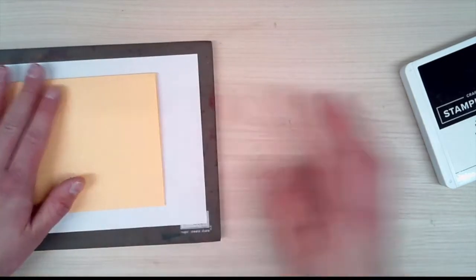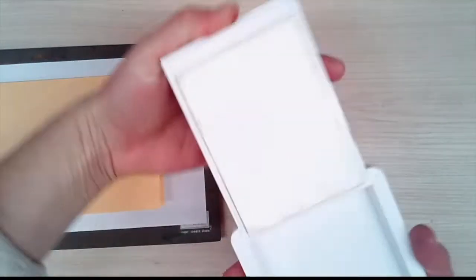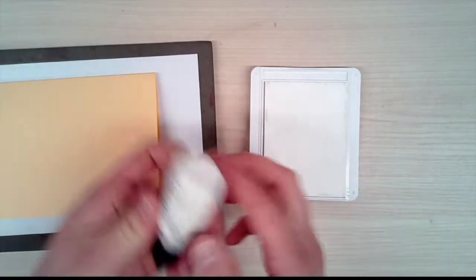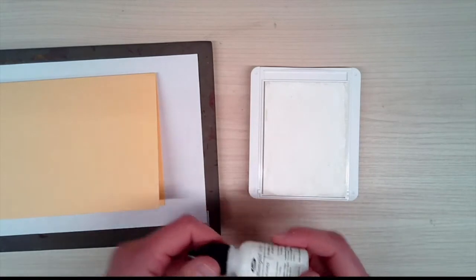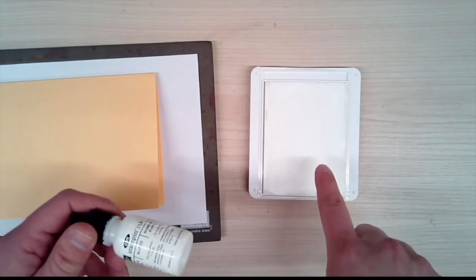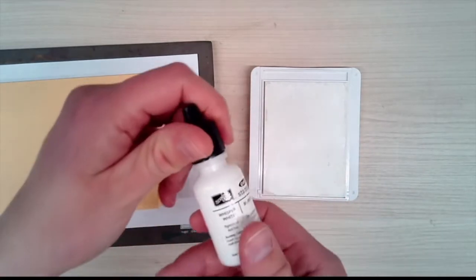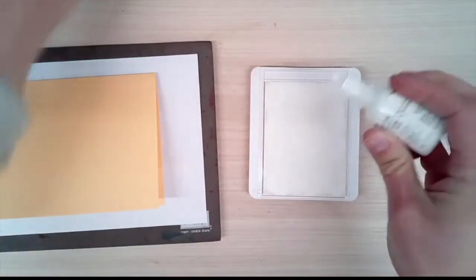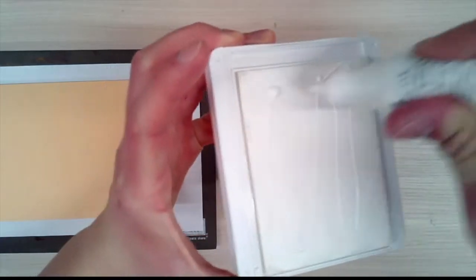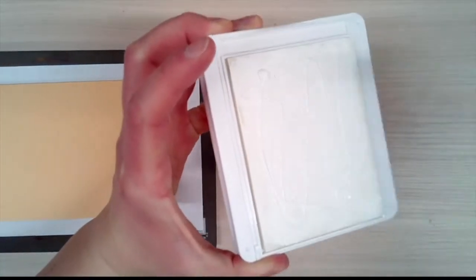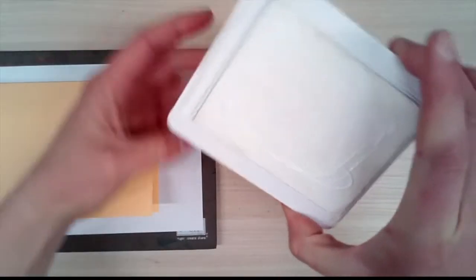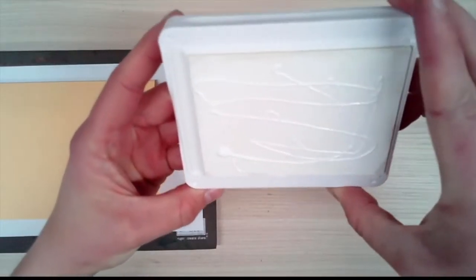I'm first going to show you how to re-ink the foam pad. Open it up, and as a lot of you know, the craft ink can be very sticky and thick and hard to absorb, especially into the foam pad. Take your re-inker and squeeze it out all over the pad. Depending on how dry your pad is, you might need more or less. Once you have it on there, it's literally not soaking in.